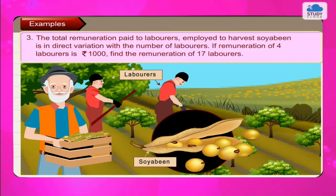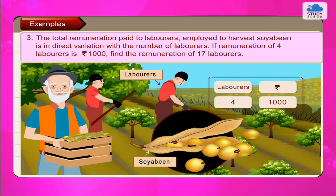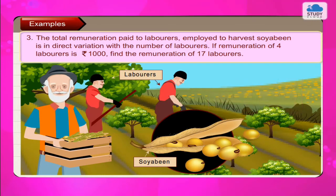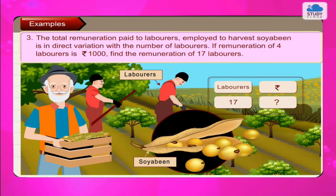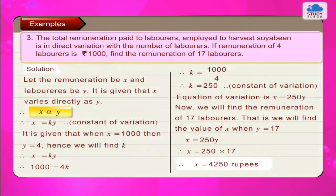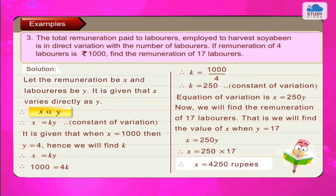Example 3. The total remuneration paid to labourers employed to harvest soya bean is in direct variation with the number of labourers. If the remuneration of 4 labourers is Rs. 1000, find the remuneration of 17 labourers. Solution: Let the remuneration be x and the number of labourers be y. It is given that x varies directly as y. Therefore x = k × y, where k is the constant of variation.